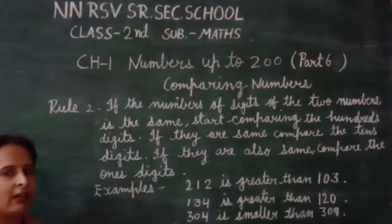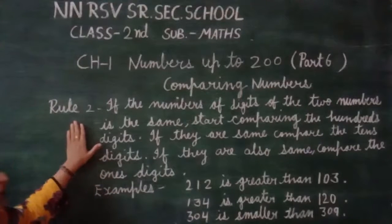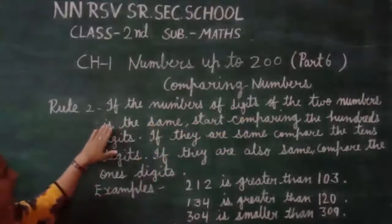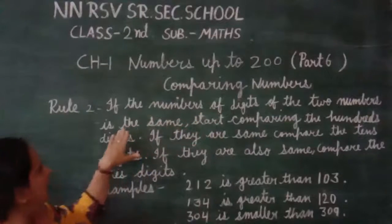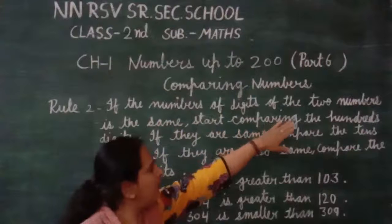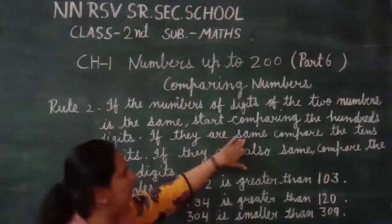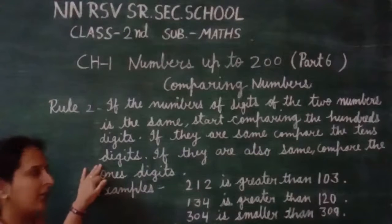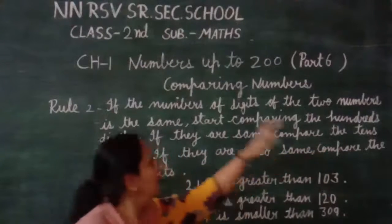But in Rule No. 2, we will discuss the comparison of 3-digit numbers — which is smaller and which is bigger. Rule No. 2: If the number of digits of the two numbers is the same, start comparing the 100s digit. If they are the same, compare the 10s digit. If they are also the same, then compare the 1s digit.